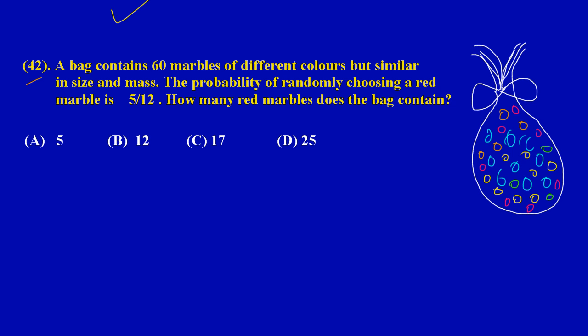Really, what they're asking us to calculate is how many red marbles does the bag contain. Now they gave us the probability, my friends. Let's go back to basics quickly. We know that probability is really equal to the number of favorable outcomes over the total amount. Based on the information that they have given us, we can easily substitute some values here. They gave us the probability. They said the probability of randomly choosing a red marble is 5/12.